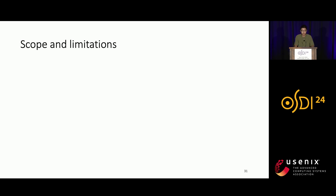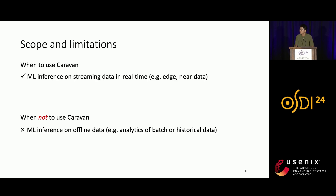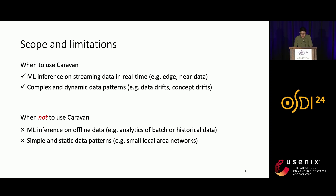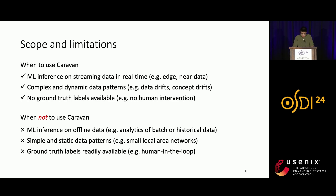Before concluding, let me discuss the scope and limitations of this work — when to and when not to use Caravan. The most compelling use case is when you need ML inference on streaming data in near real-time, such as edge computing or near-data computing. If you want offline inference on batch or historical data, Caravan is not the right system. Caravan works best when the model is deployed in a complex and dynamic environment with changing data patterns and concept drift. If you have no ground truth labels or online reward functions, that's a great use case for Caravan; but if you have human-in-the-loop labelers providing very high-accuracy labels, you don't need Caravan's weak supervision labels.